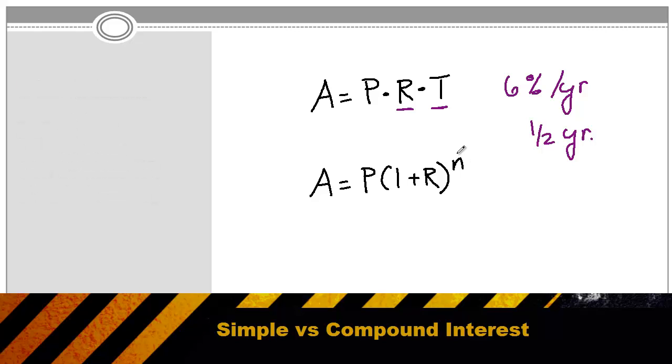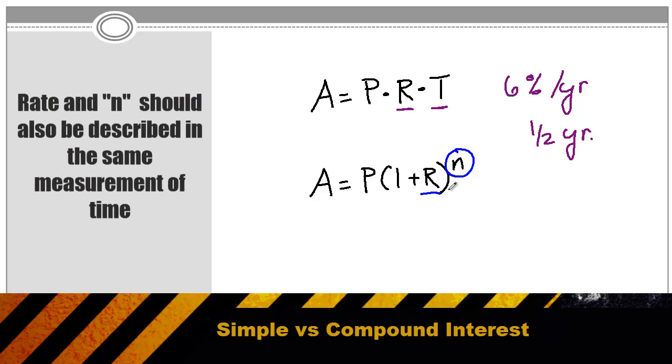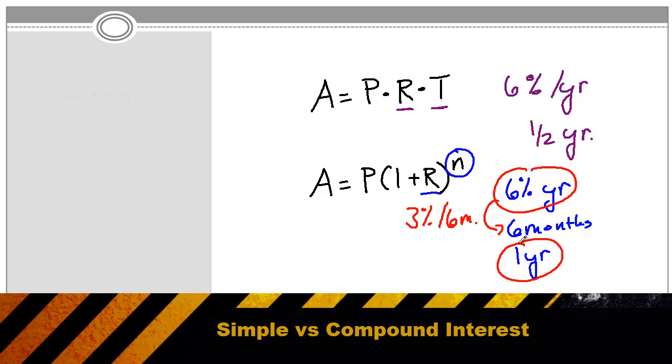Just like in simple interest, the number of times it's compounded and the interest rate should be described using the same unit of measure. So if we had an account that was paying 6% per year, but it was compounding every six months, and we kept the money for one year, we would want to write the yearly interest rate in terms of six months. So instead of calling it 6% per year, we would call it 3% per six months. And then within the one year we were keeping the money in the account, we would calculate the interest two times in that year. So our n would be equal to 2.